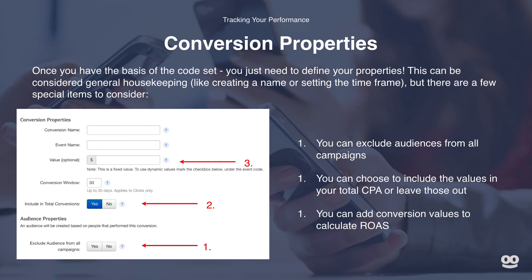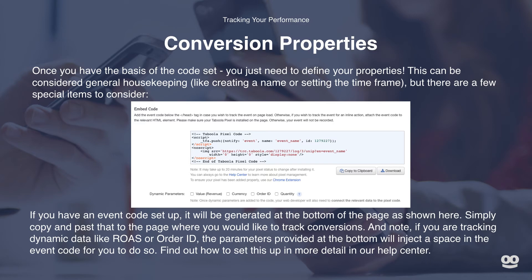Finally, you have the option to add a specific value to calculate ROAS or return on ad spend. Note that this is a fixed value — if you want to use dynamic marks, there are checkboxes available to do so. If you have an event code set up, it will be generated at the bottom of the page as shown. Simply copy and paste that to the page where you would like to track conversions. If you are tracking dynamic data like ROAS or order ID, the parameters provided will inject a space in the event code for you to do so. You can find out more on this setup in our help center.